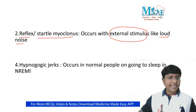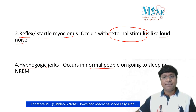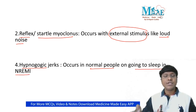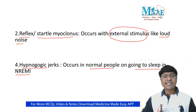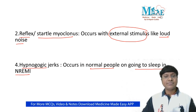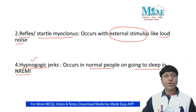Another variety is hypnagogic jerks. This is the one which occurs in normal people on going to sleep, in NREM sleep — so this is a normal variant. The individual is about to go into NREM sleep and will have jerky movements, which are normal. That is what is called hypnagogic jerks.